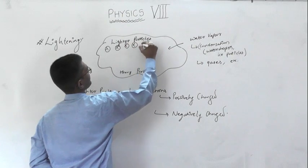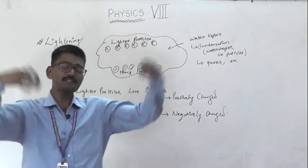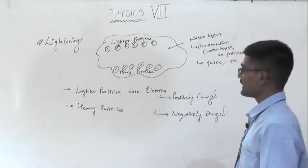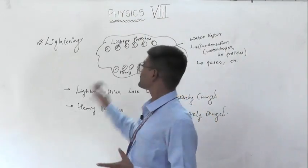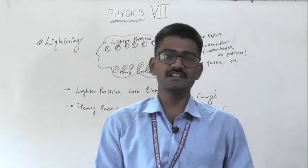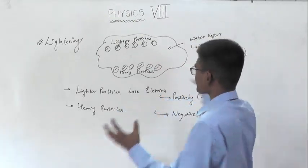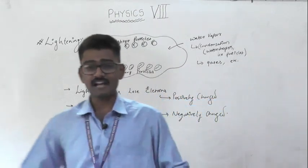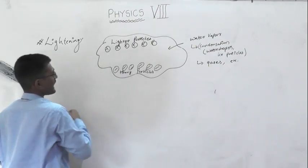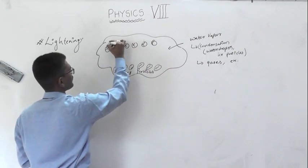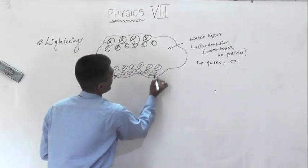These charges keep forming as the cloud accumulates bigger and bigger. Heavier negative charges keep accumulating at the bottom of the cloud. It is like compressing a spring — the more you compress, the more energy builds up. After some time, the cloud becomes highly negatively charged at the bottom and highly positively charged at the top.